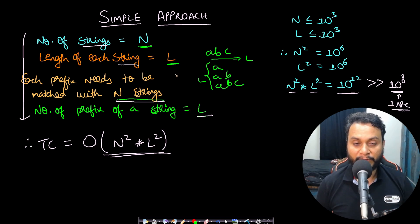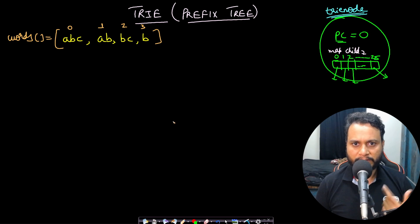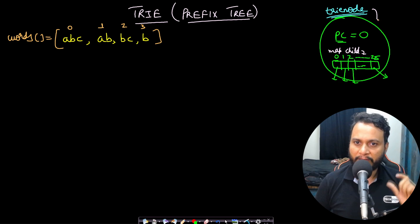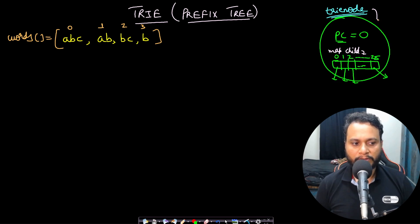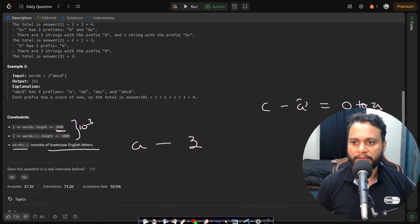Since the naive approach doesn't work, we need to optimally solve this prefix counting problem. If you've seen the Trie video, you know that a prefix tree is the way to go here — one of the important use cases of a prefix tree is to count prefixes. In the Trie approach, we insert all words into the Trie. Each Trie node has two variables: a prefix counter and child pointers. Since all characters are lowercase English letters, we have 26 child pointers (indices 0–25).